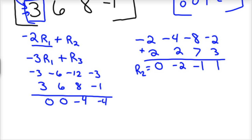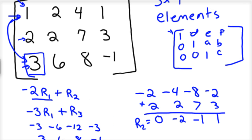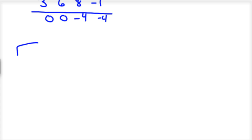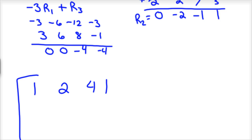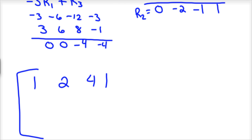So that's my new row 3. So I have a new matrix of 1, 2, 4, 1. My new row 2 is 0, negative 2, negative 1, and 1. And my row 3 now is 0, 0, negative 4, negative 4. So that is my new matrix.